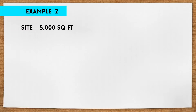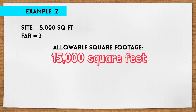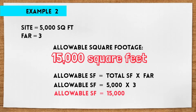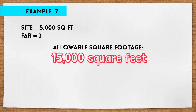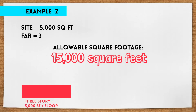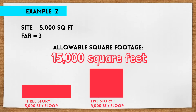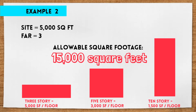Now let's say the site is 5,000 square feet and the FAR is 3. That means the owner is allowed to build a structure that's up to 15,000 square feet, because 5,000 times 3 is equal to 15,000. That could be a three-story structure that's 5,000 square feet per floor, or a five-story structure that's 3,000 square feet per floor, or a 10-story structure that's 1,500 square feet per floor.